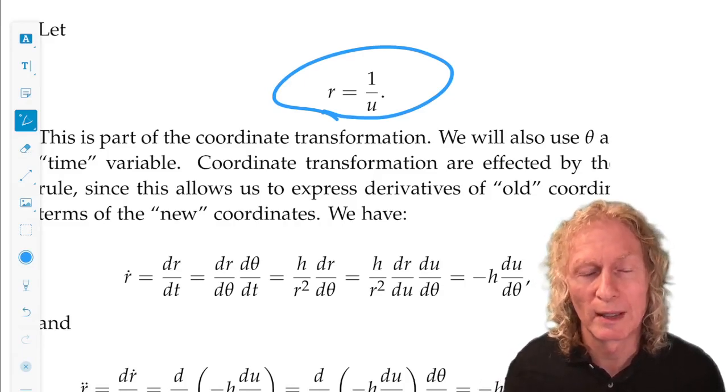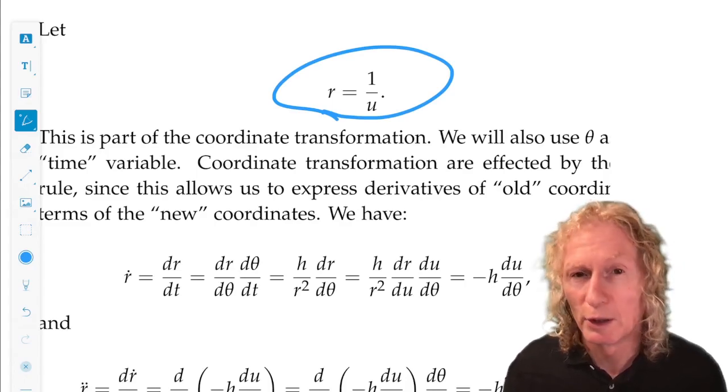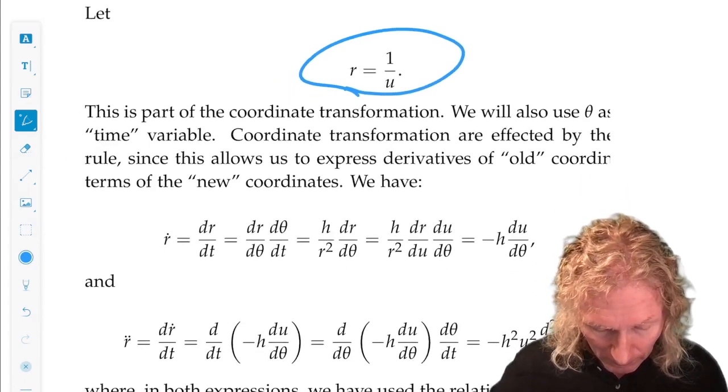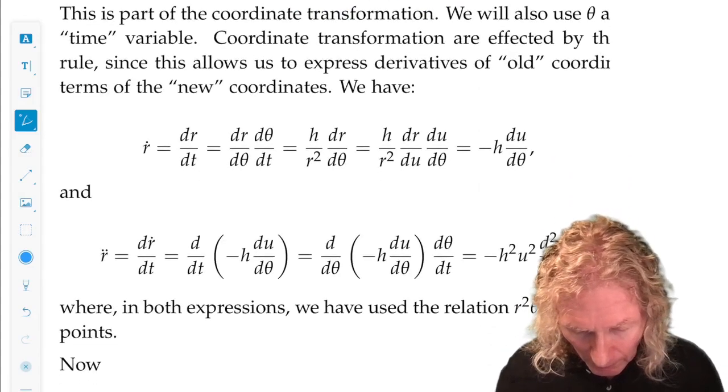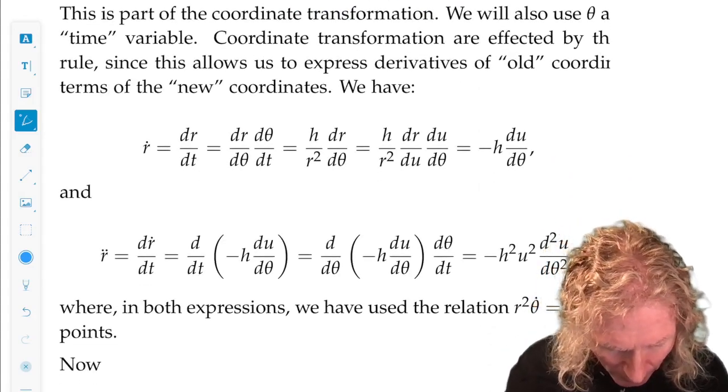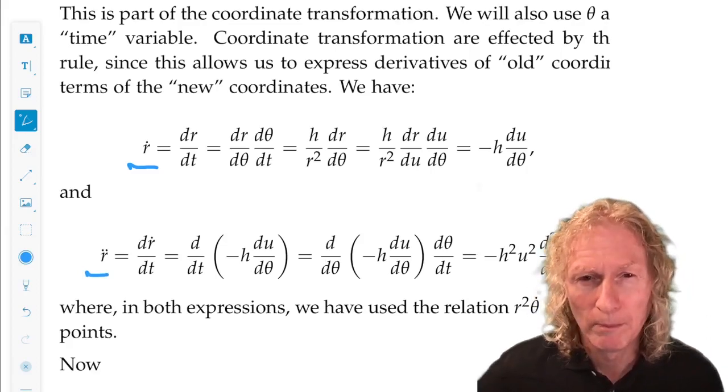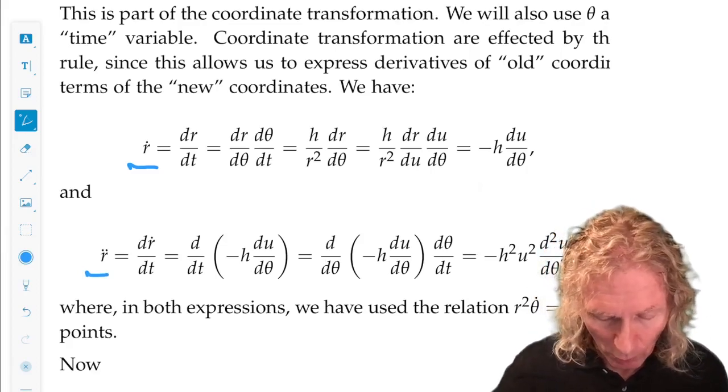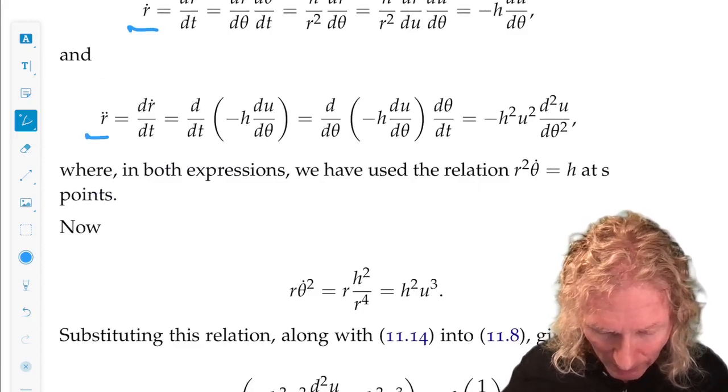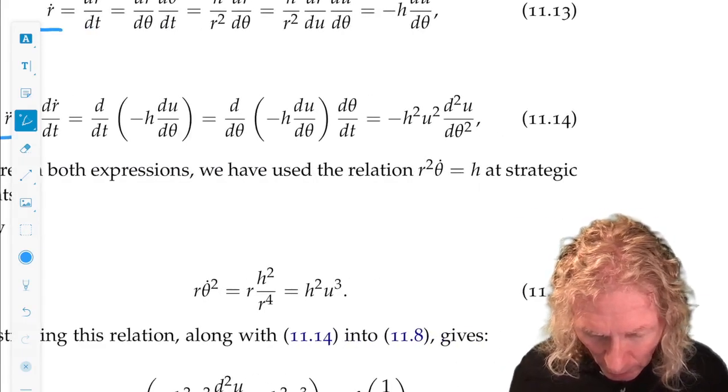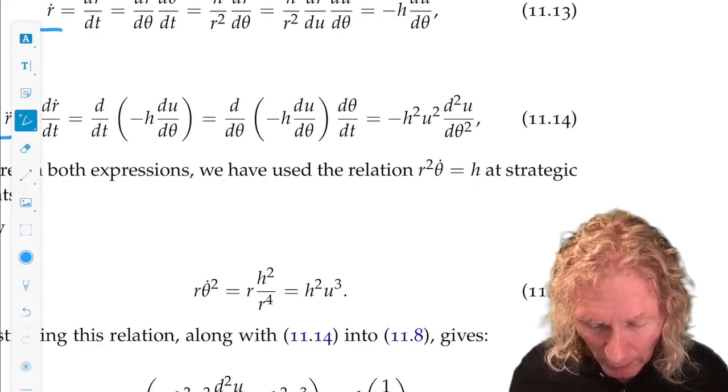Solve, write the equation in terms of u and u double dot. So, a lot of chain rule going on here, and you all are quite good at that by now. We're going to do the chain rule twice with this new r equal 1 over u.